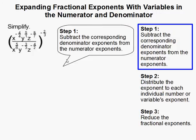First thing you need to do is subtract the corresponding denominator exponents from the numerator exponents. So what does that mean? That means, see how this x variable has negative 4 over 4, and this has 5 over 6, so we need to subtract those.